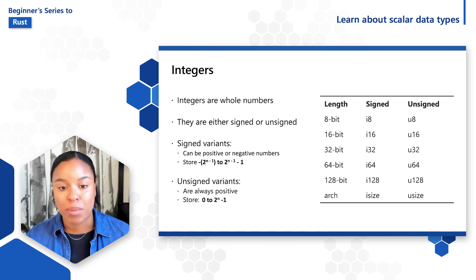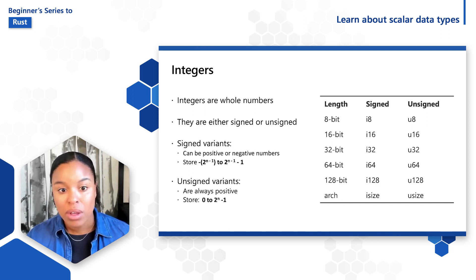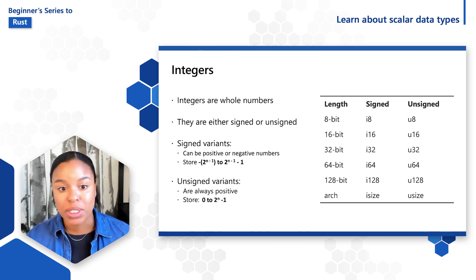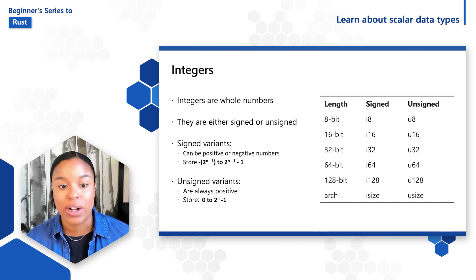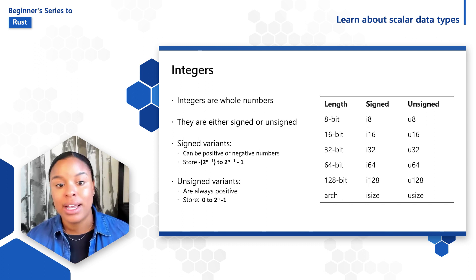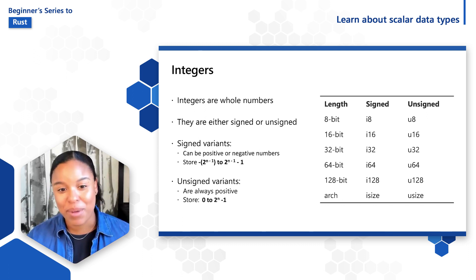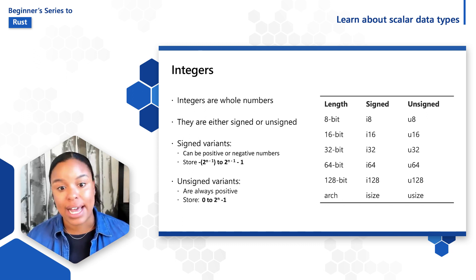Unsigned variants can store numbers from 0 to 2 to the n minus 1. So an unsigned 8-bit integer can store numbers from 0 to 255. Additionally, the isize and usize type depends on the kind of computer your program is running on — 64 bits if you're on 64-bit architecture and 32 bits if you're on 32-bit architecture. The primary situation in which you use isize or usize is when indexing some sort of collection.